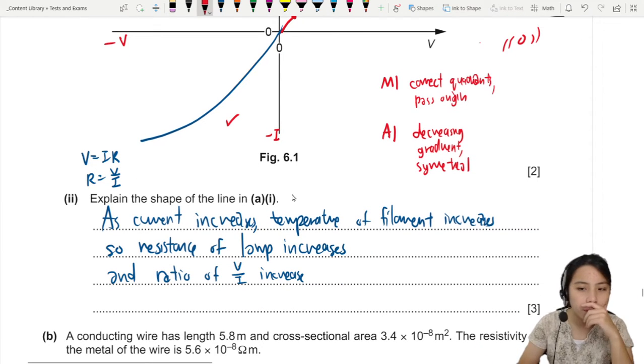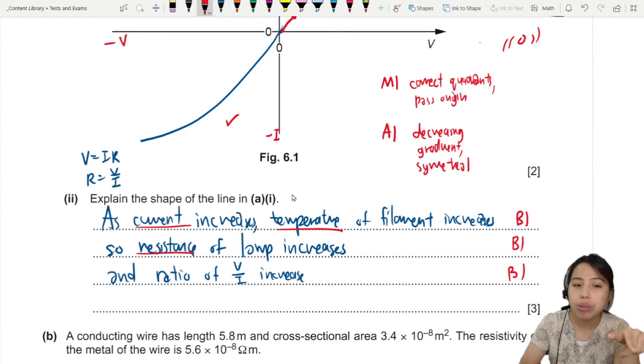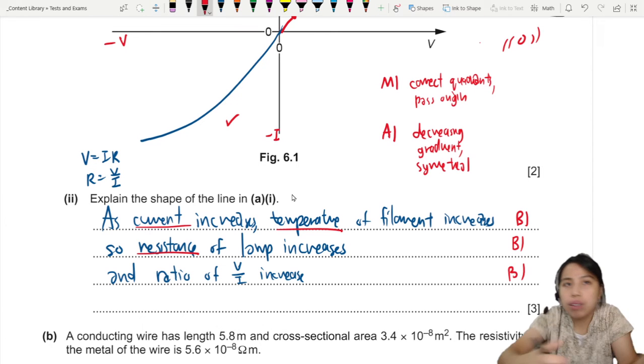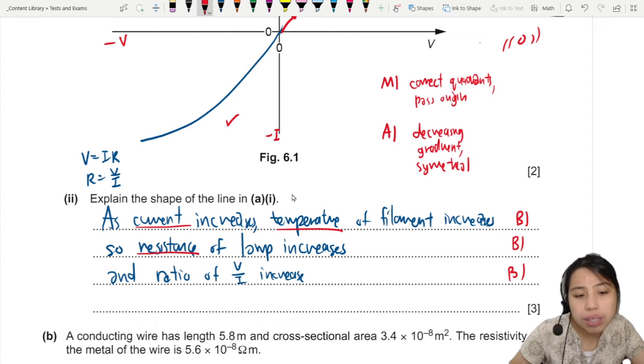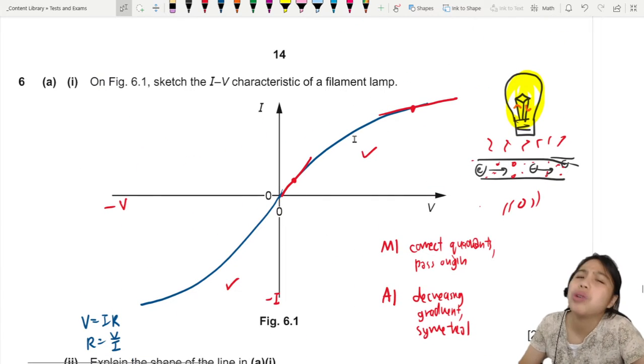So these three points is B1. Talk about how your filament, how current or voltage affects your temperature. Temperature then is linked to resistance. Everybody's hot, everybody is vibrating inside the wire. And then resistance then is related to the ratio of V over I. Not the gradient of the graph. Ratio of V over I.